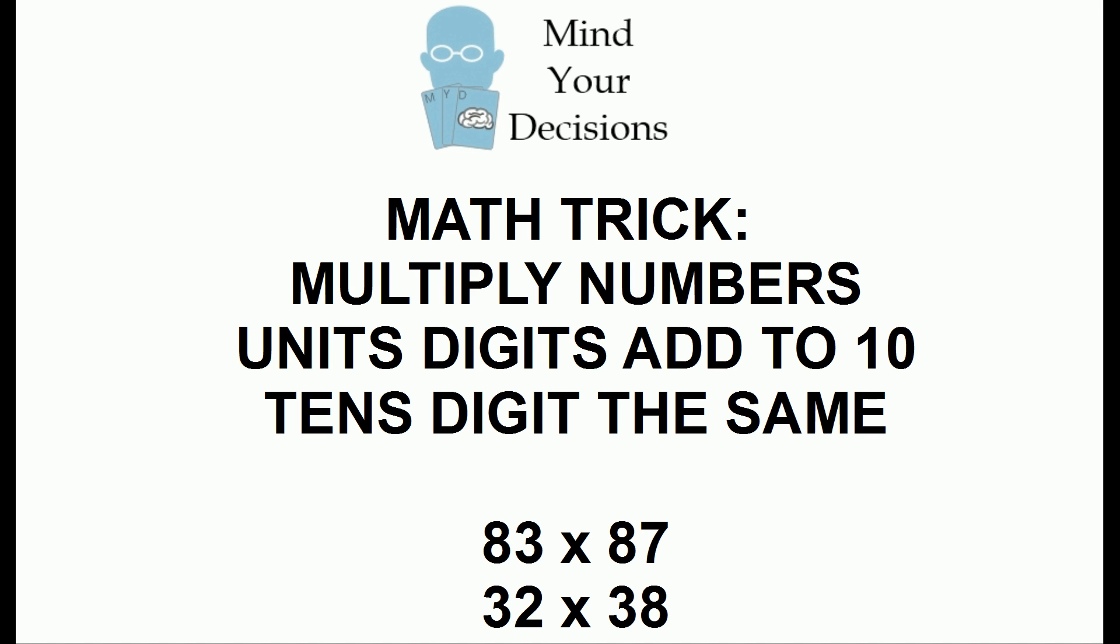Hi, this is Presh Talwalkar. In this video I'm going to teach you a trick to multiply two numbers very quickly in your head if the two numbers have a special property. What you want to look for is you want to see if the two numbers have units digits which add up to 10 and they have the tens digit which is the same.